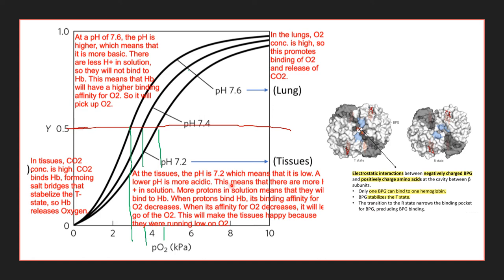At lower pH, more hydrogen ions bind hemoglobin, decreasing its oxygen affinity and causing it to release oxygen. At pH 7.6 — higher pH, more basic — fewer hydrogen ions are in solution, so they don't bind hemoglobin. Hemoglobin then has a higher affinity for oxygen, which is perfect for the lungs where we're breathing in oxygen. In the tissues, high CO2 concentration causes CO2 to bind hemoglobin, forming salt bridges that stabilize the T-state and cause hemoglobin to release oxygen.